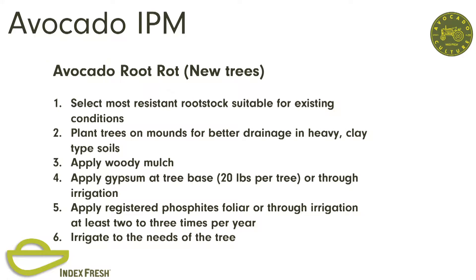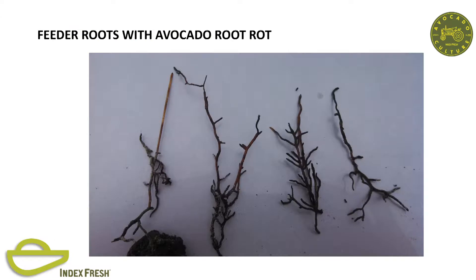With avocado root rot: new trees, resistant root stocks, plant on mounds, woody mulch, gypsum, apply registered phosphites, irrigation—it's the common recurring theme. If anybody hasn't seen what active root rot looks like: when you're sampling the root, the mottled tan with alternating light and dark sections is an active infected root. That's what you want to look for when sampling. You don't want to take the dead material—sometimes you'll get low counts.